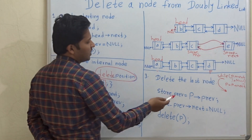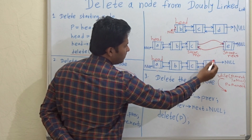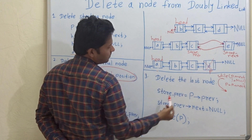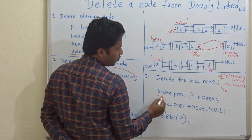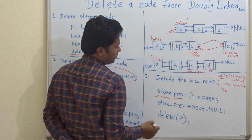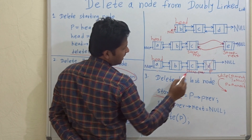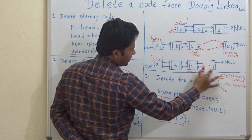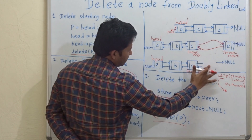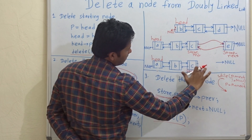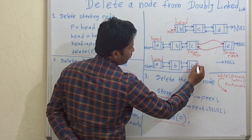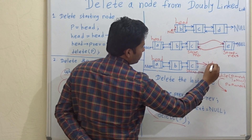When we come out of the while loop, if we delete this node we lose the address of c, because d's previous pointer holds the address of c. So we store this address in store_previous. Then we delete p and the next pointer of store_previous should point to null. This is how we delete a node from a doubly linked list.